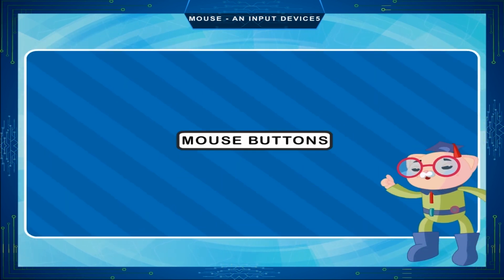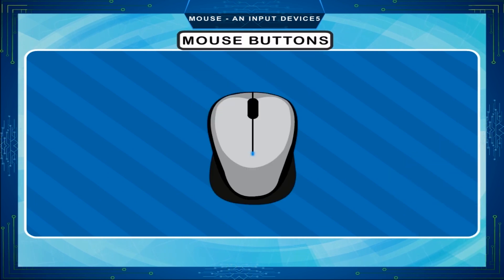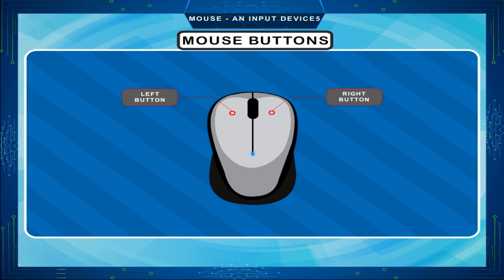Mouse buttons. A mouse has two or three buttons on it. The button on the right side is called the right mouse button. The button on the left side is called the left mouse button. They are used for left and right click.